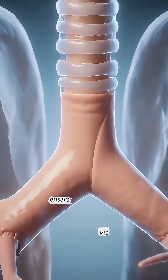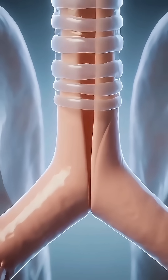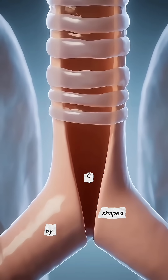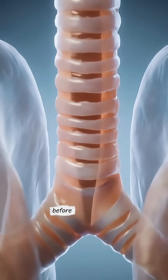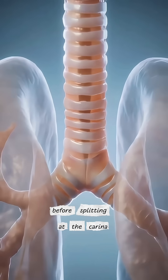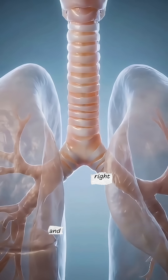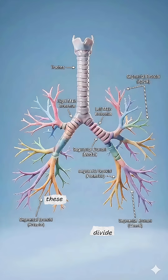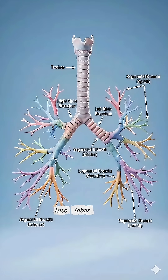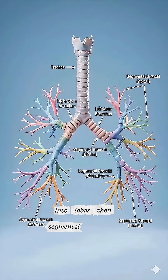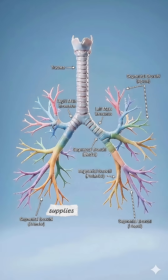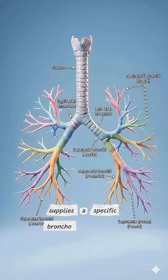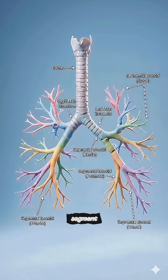Air enters via the trachea, reinforced by C-shaped cartilage rings, before splitting at the carina into the left and right primary bronchi. These divide into lobar, then segmental bronchi — each supplying a specific bronchopulmonary segment.